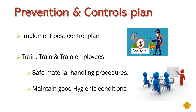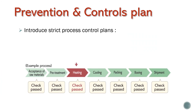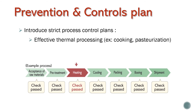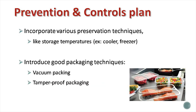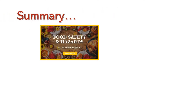Train, train, and train your employees. Introduce strict process control plans like effective thermal processing, cooking and pasteurization, with control parameters like temperature and timing. For the prevention of biological hazards, food business operators can also incorporate various preservation techniques.